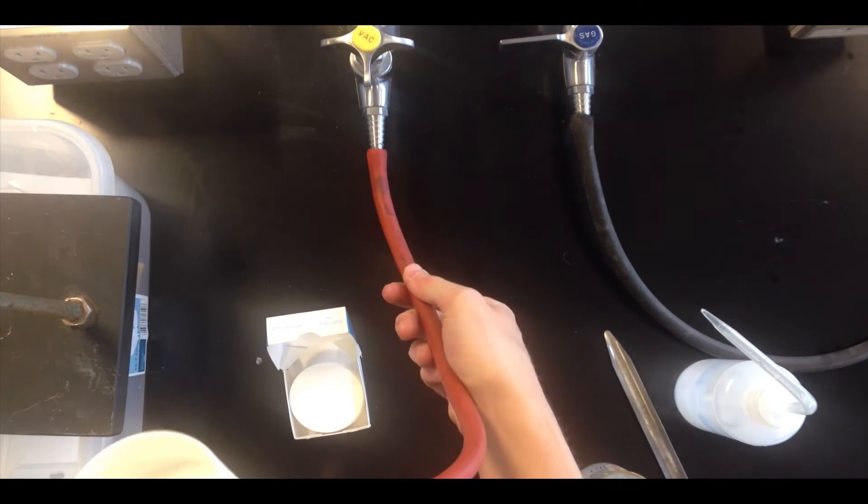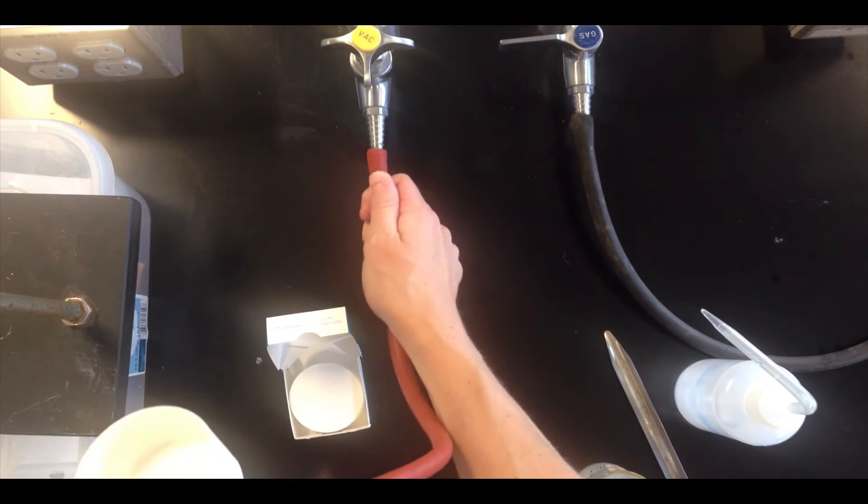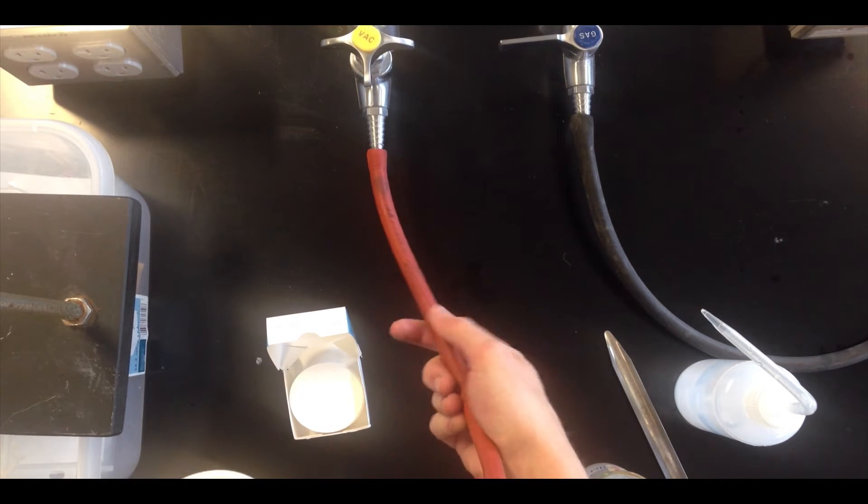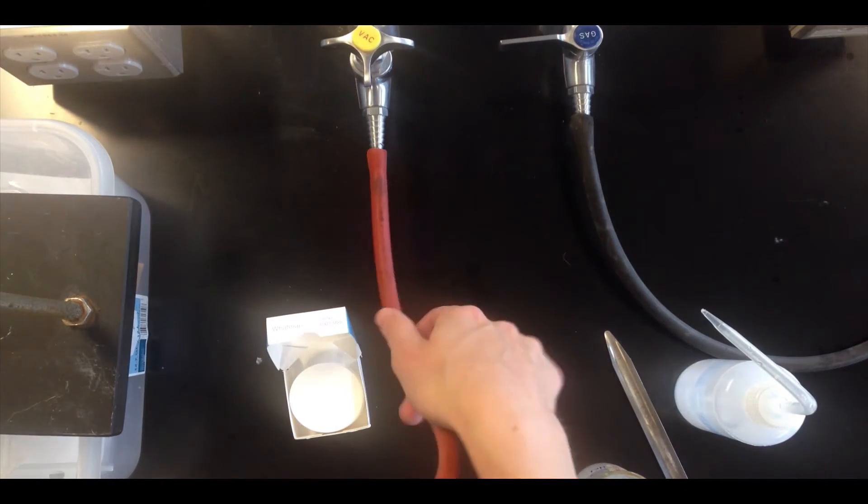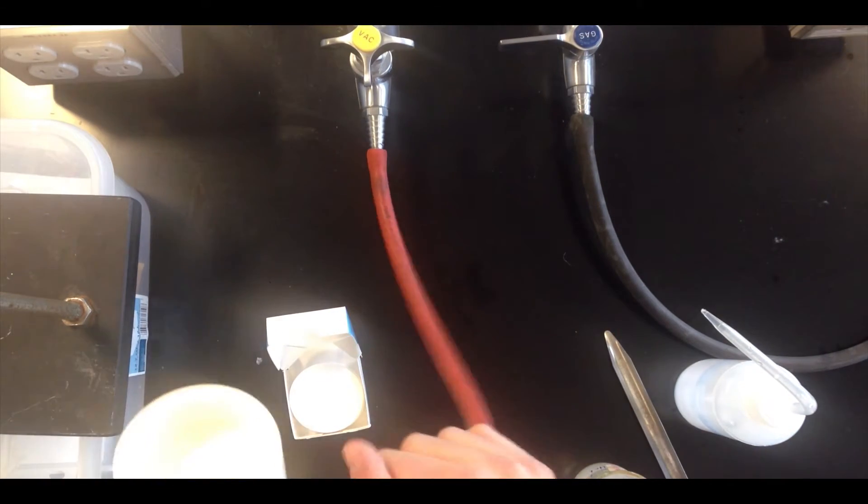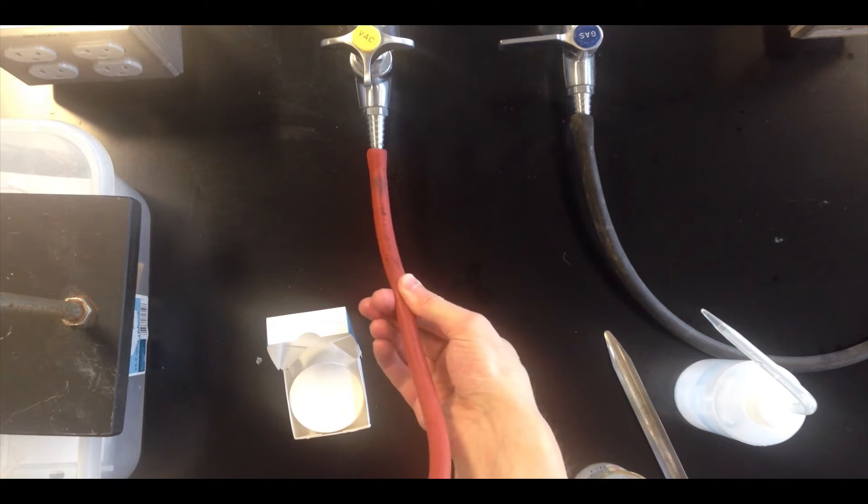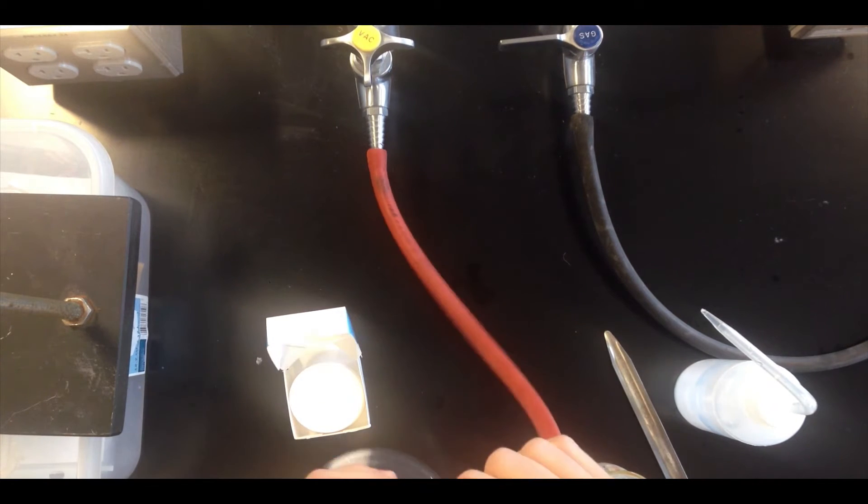You'll also notice that this tubing is a little bit thicker than the gas tubing in many cases, and we want to use thick tubing with the vacuum tap because we want the tubing to hold its shape when the vacuum starts pulling air out of here, and only the thicker tubing is able to do that. You won't get good vacuum if you use thin-walled tubing that crimps up like this when you turn the vacuum on.